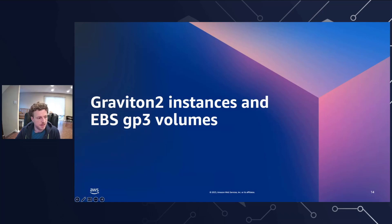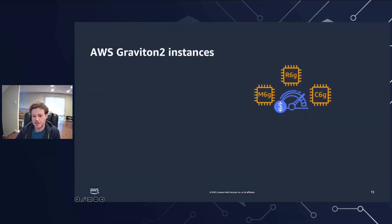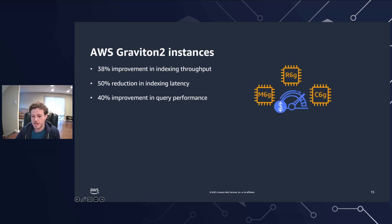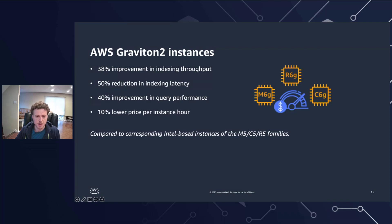Let's talk about the latest generation of Graviton2 instances and EBS GP3 volumes. Amazon OpenSearch Service now offers instances from the AWS Graviton2 instance family. These are the M6G, C6G, and R6G node types. These instances deliver up to 38% improvement in indexing throughput, up to 50% reduction in indexing latency, and up to 30% improvement in query performance when compared to corresponding x86 Intel-based M5, C5, and R5 nodes. These latest generation instances also come with a 10% cost reduction over the fifth generation instances of the same type.